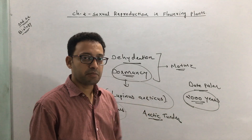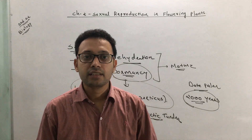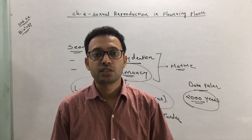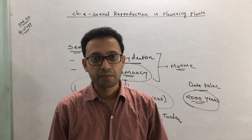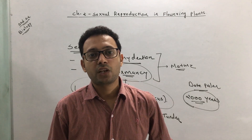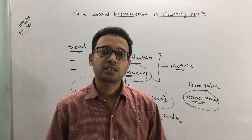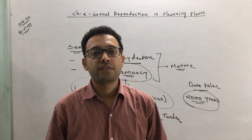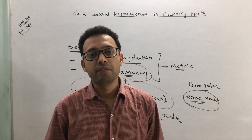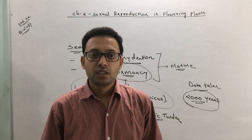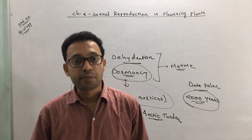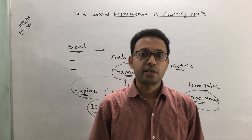So today we have seen the seed, a product formed by fertilization of an ovule. Only two topics remain: apomixis and polyembryony. Afterwards we will finish the chapter and then do a revision. So till then, keep watching, keep learning — like and subscribe to this channel.